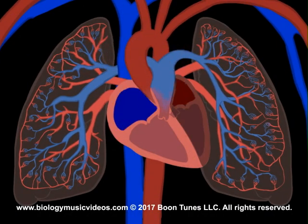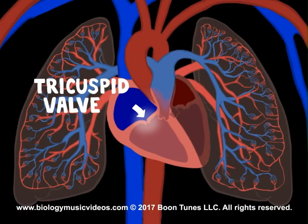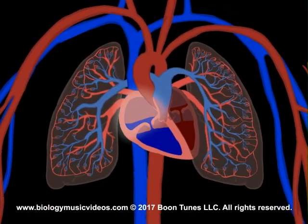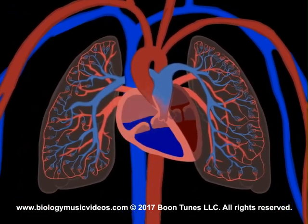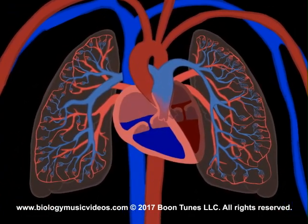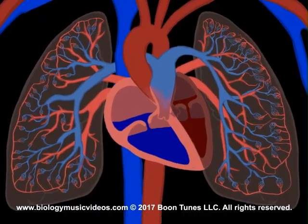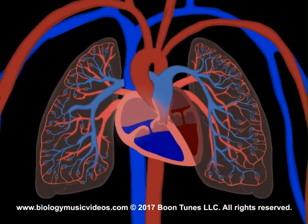The coronary sinus does the same with venous blood from cardiac veins. The atrium is in diastole and fills with blood easily. The tricuspid valve lets it flow to the right ventricle that's relaxed below.